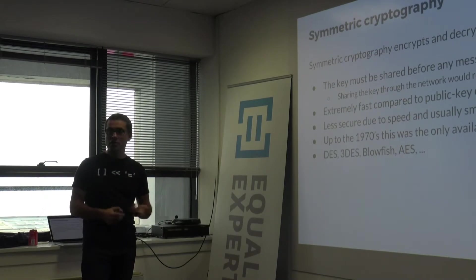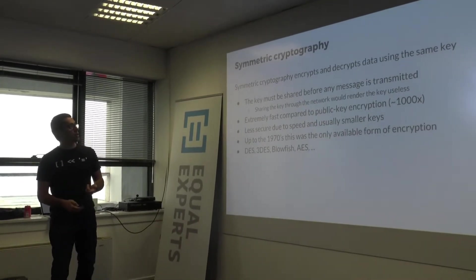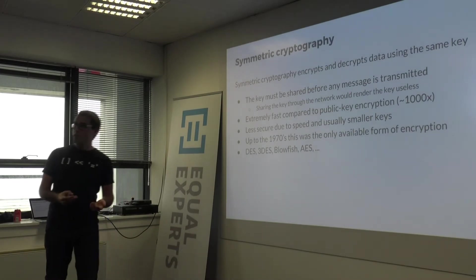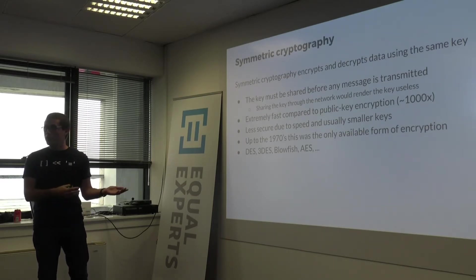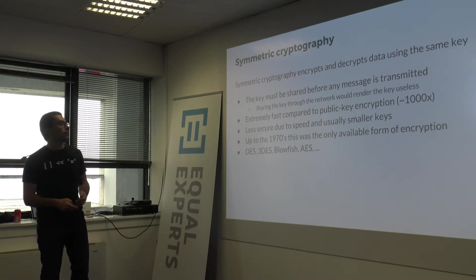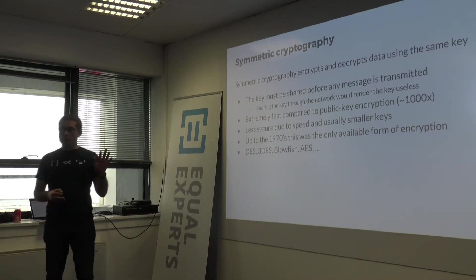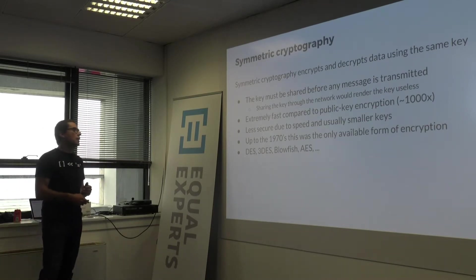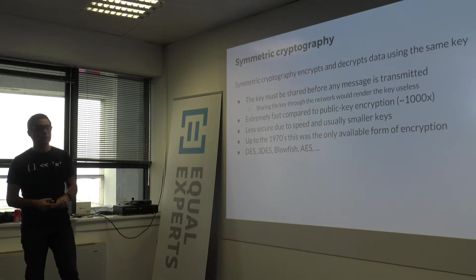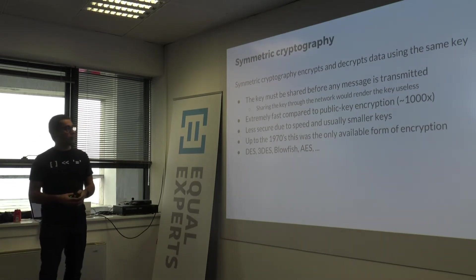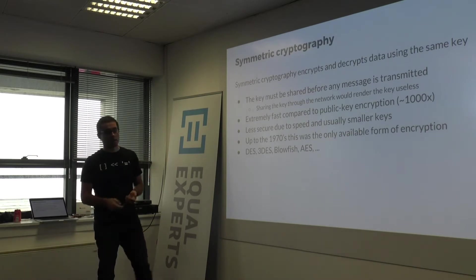Symmetric cryptography: we encrypt and decrypt the data using the same key. The drawback is needing to share a key before starting to encrypt anything. If you send the key over the network, it's essentially the same as having no encryption because an attacker can just intercept the key. These algorithms are extremely fast — around 10,000 times faster than public key encryption. They are less secure due to susceptibility to brute force attacks and because they usually use smaller keys. This was the only available type of encryption until the 1970s. Examples include DES, Triple DES, Blowfish, AES, and so on.